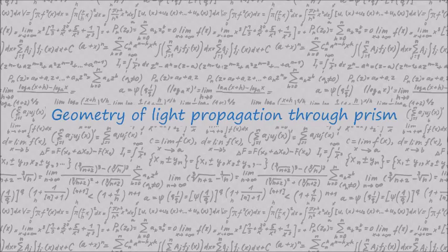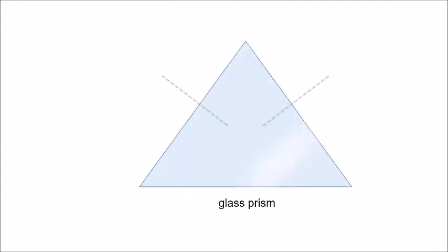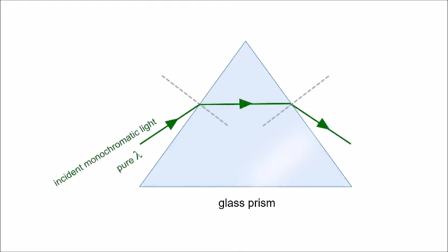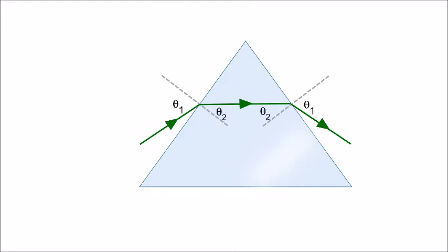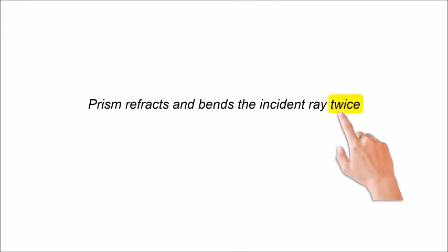Geometry of light propagation through a prism. The prism refracts and bends the incident ray twice.